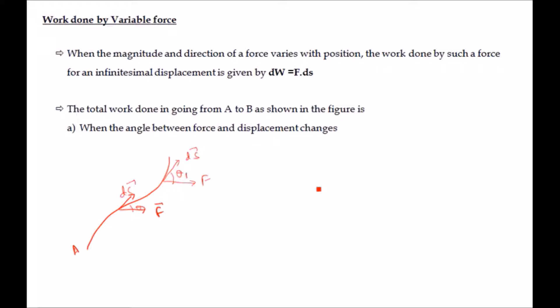If the force is not constant, or if the angle between force and displacement is also not constant, then we cannot use the normal method of calculating work done. As we know, work done is given by W = F·s, which is the dot product of force and displacement, equal to F·s·cosθ. Now if the angle θ is changing or the force changes with position, this formula cannot be directly applied.